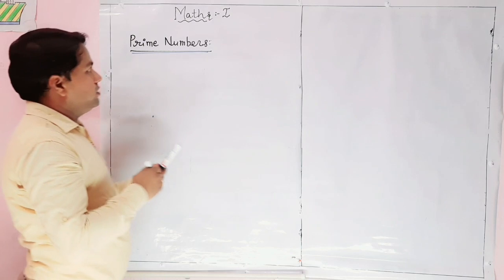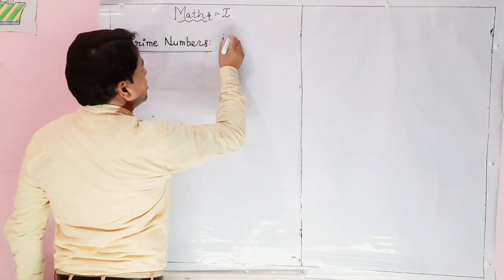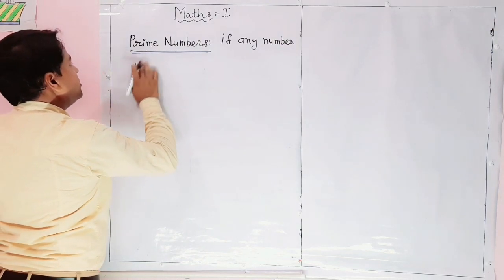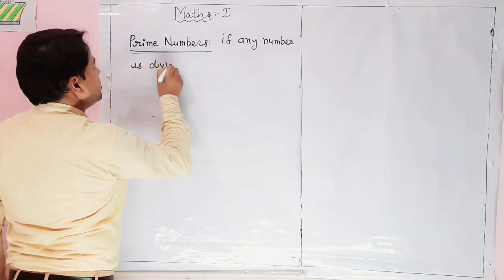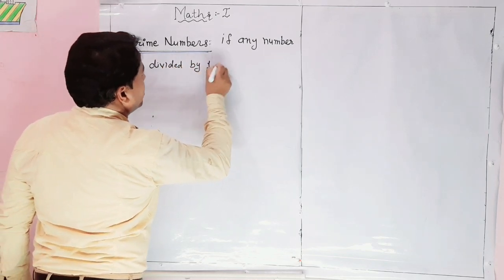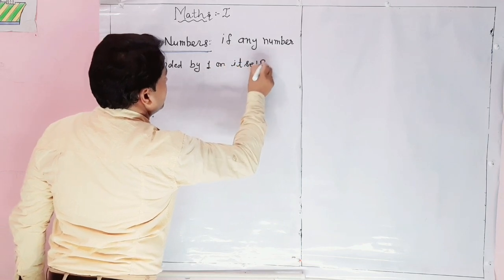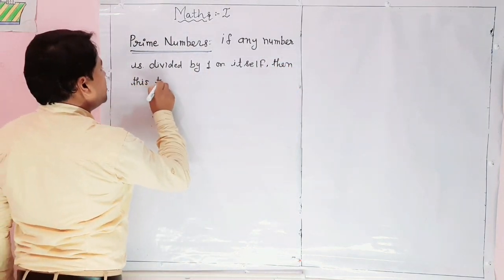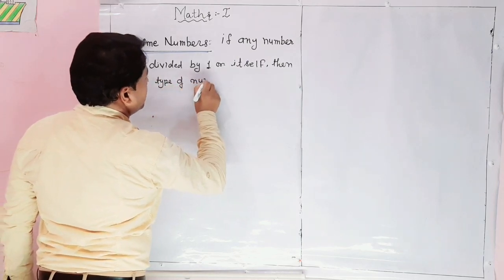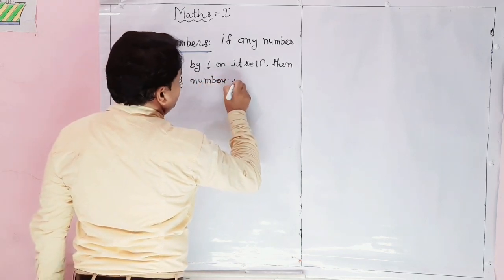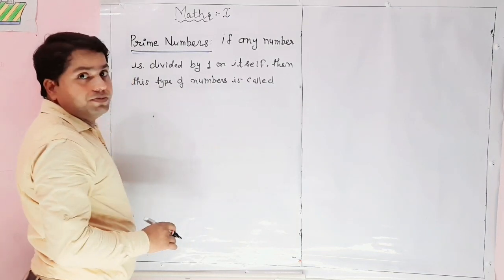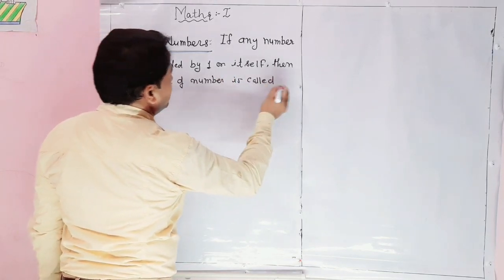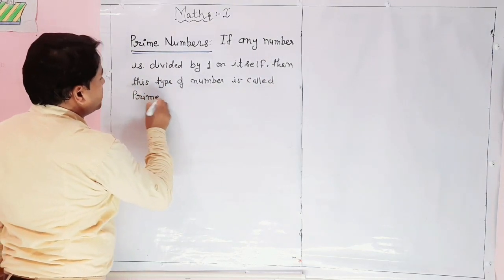Prime numbers. If any number is divided by one or itself, then this type of number is called prime number.